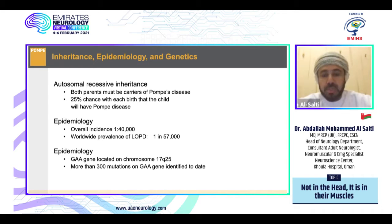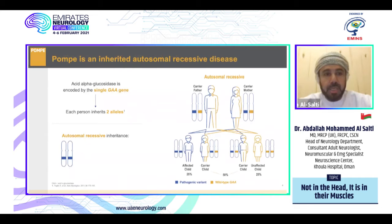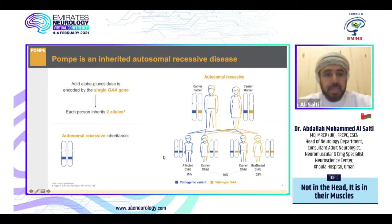The GAA gene is located on chromosome 17q25, and more than 300 mutations on the GAA gene have been identified to date. Pompe disease is inherited as an autosomal recessive disease. Both parents are carriers, resulting in 50% of children being carriers and a 25% chance that a child will have the disease. It is encoded by acid alpha-glucosidase; each person inherits two alleles.